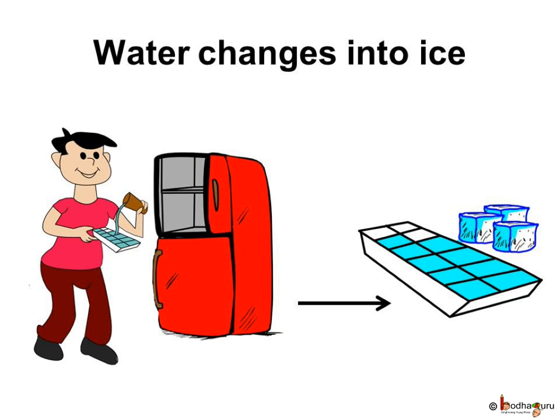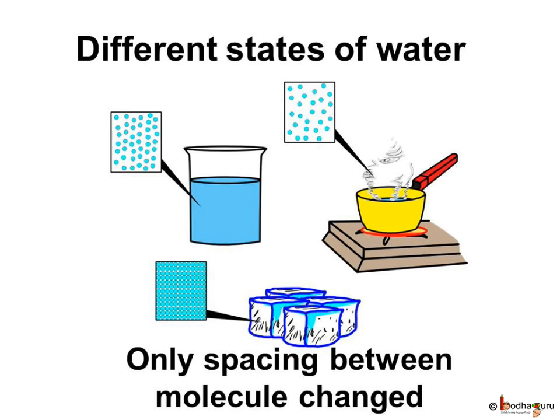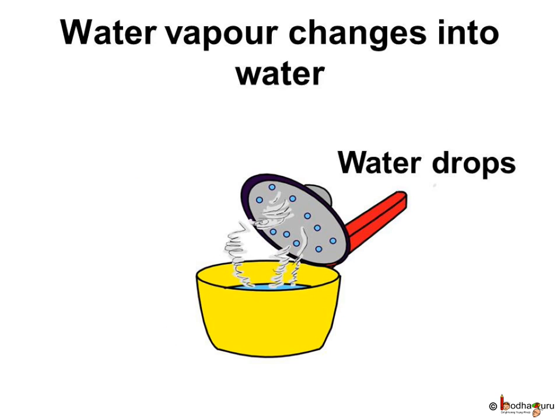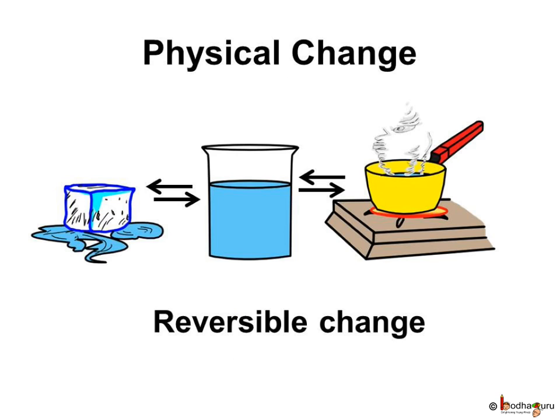In this case, the molecules of water remain the same, but the space between the molecules changes. This change can be reversed by reversing the conditions. Like if we cool water vapor it turns into water, and if we heat ice it becomes water again. This kind of reversible change is called physical change.